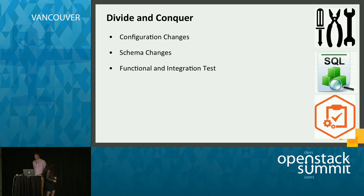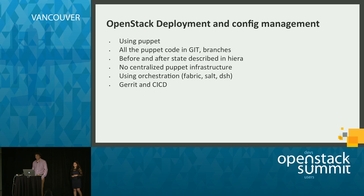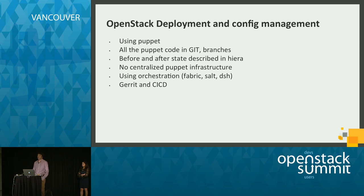Starting with this next slide, we're going to get into more details on how we actually performed the upgrade. We use Puppet to deploy our OpenStack infrastructure, and we have everything in Git. Whenever we start working on a new upgrade plan for a new release, we start testing that Puppet code. We use Hiera for everything, so our code does not have any hard coding — everything is described in Hiera.